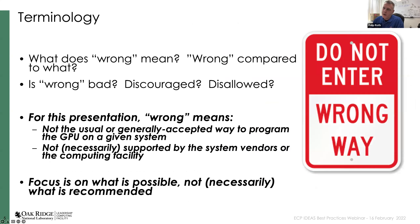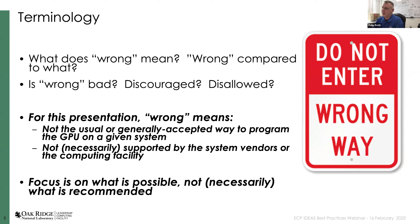Some of you may wonder about the title. For the purposes of this presentation, 'wrong' means it's not the usual or generally accepted way to program a GPU on a system — not necessarily something supported by the system vendors or the computing facility. The real activity here is to think about what's possible, not necessarily what's recommended. Perhaps I could have chosen 'off the beaten path' instead of 'wrong way,' but I hope everyone will forgive the hyperbole.